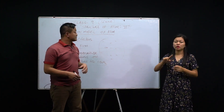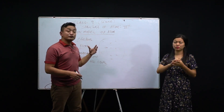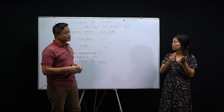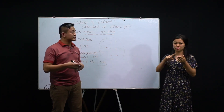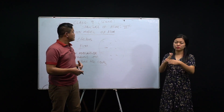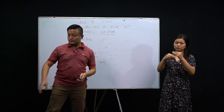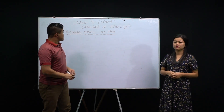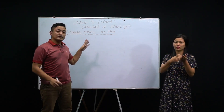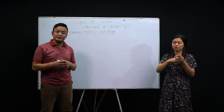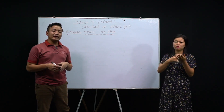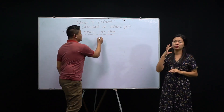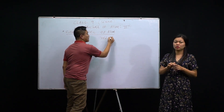Now the next model we'll discuss is the Rutherford model of an atom. Rutherford played a very important role in contributing to the structure of an atom. He did an experiment — that experiment is very important. He took a gold foil.